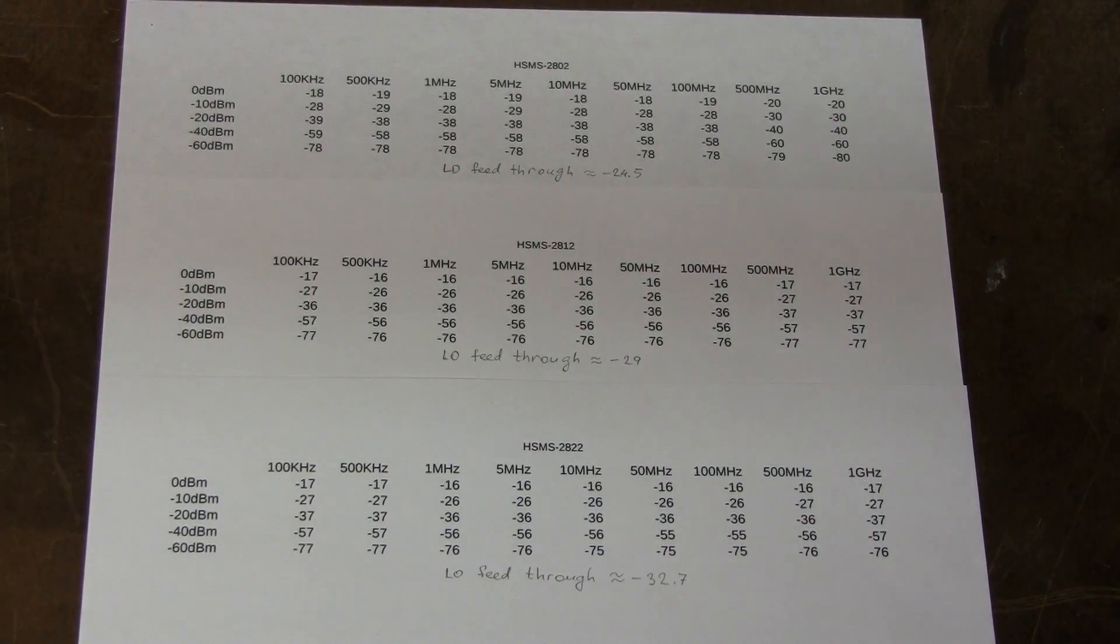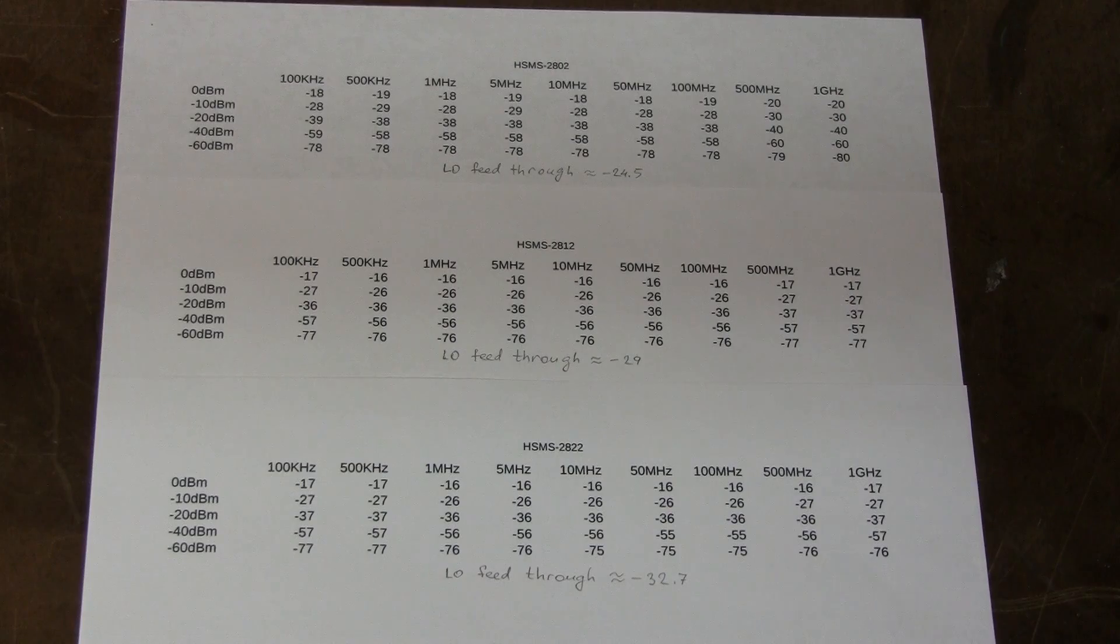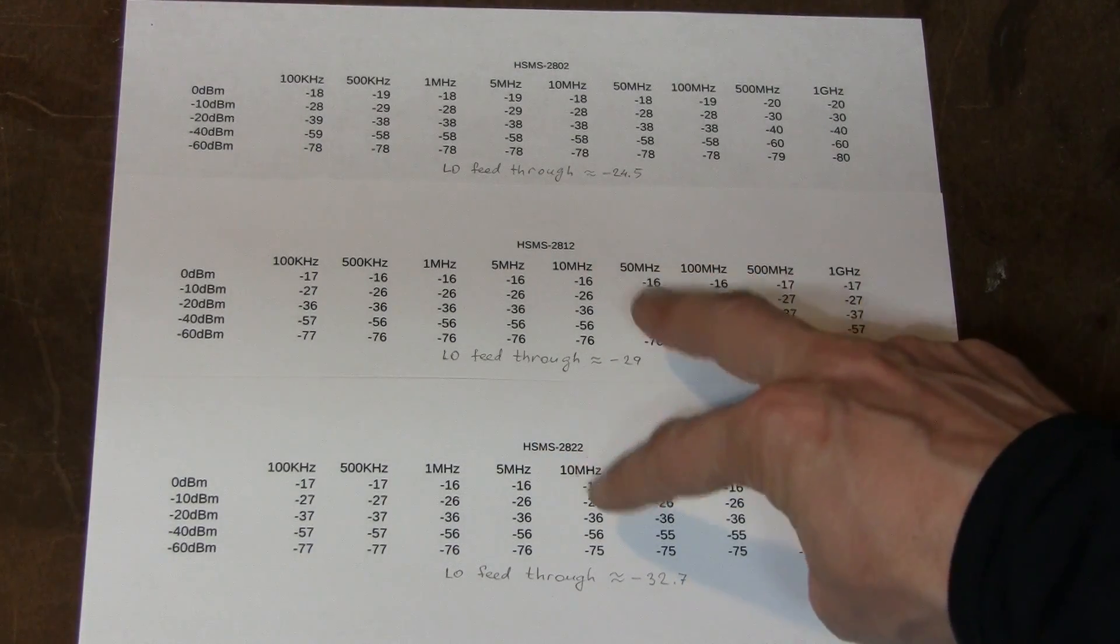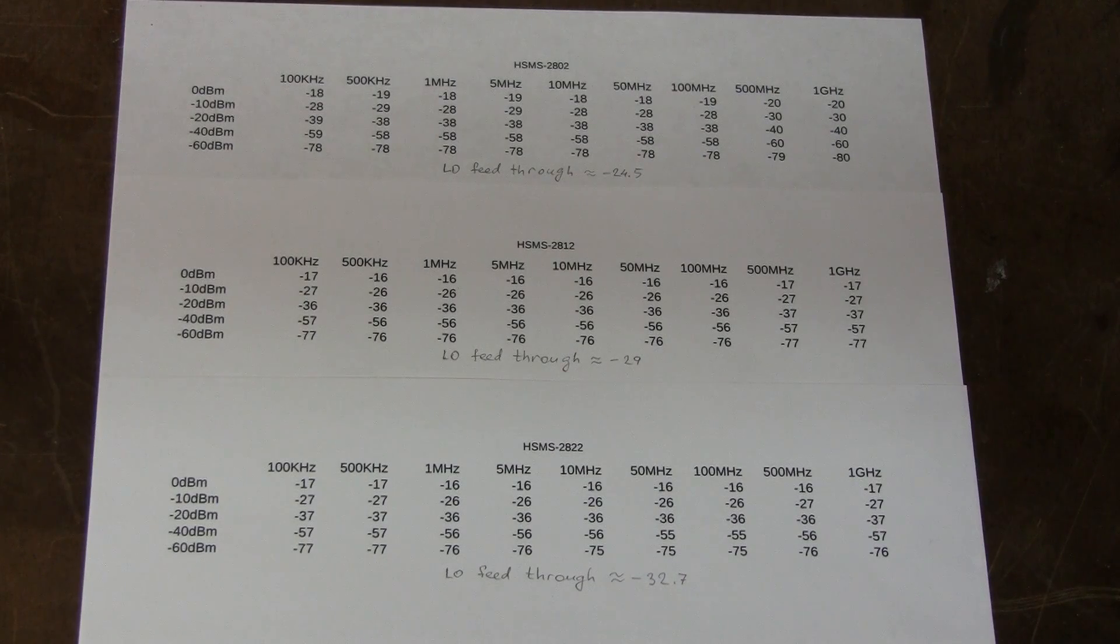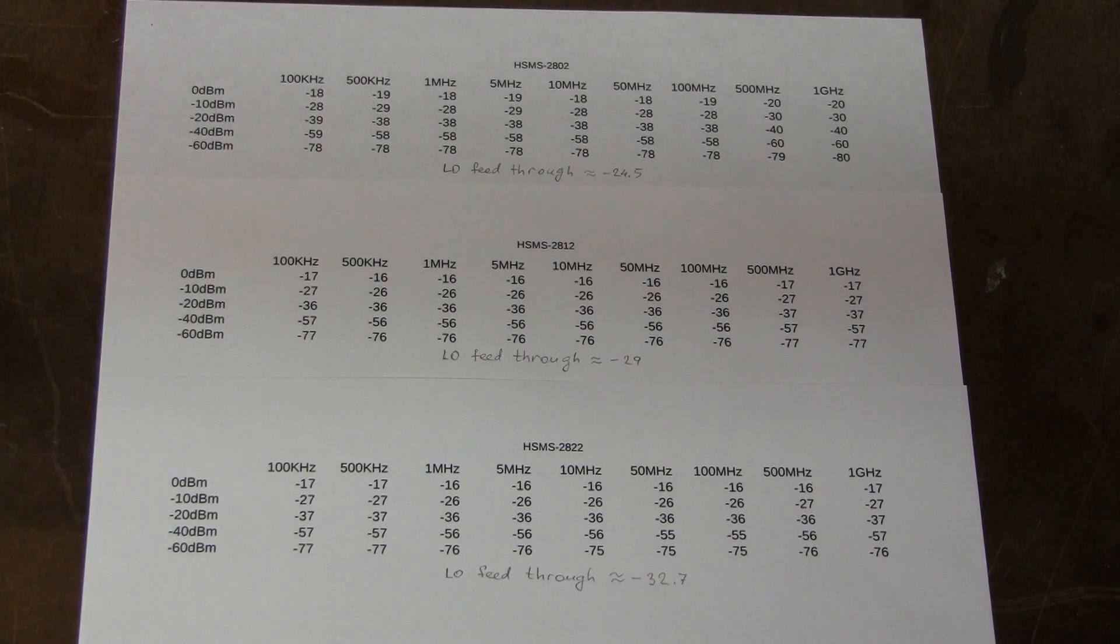Here we have the results for all three families. We've seen these results before. And as you can see the LO feed-through gets lower and lower and the signal gets higher and higher. But not much. These two are almost identical. 1 dB difference here and there is probably not very significant.